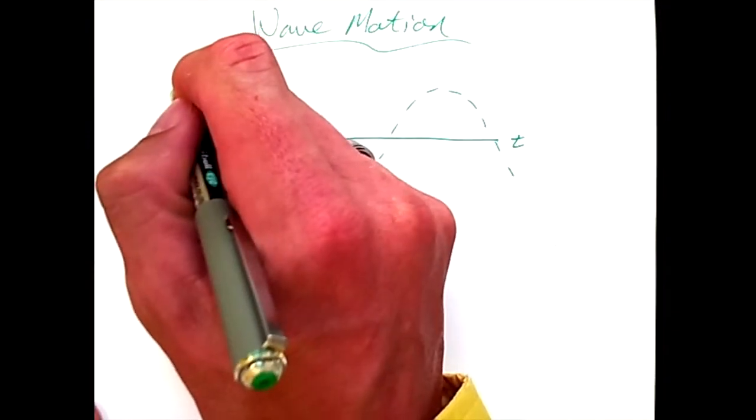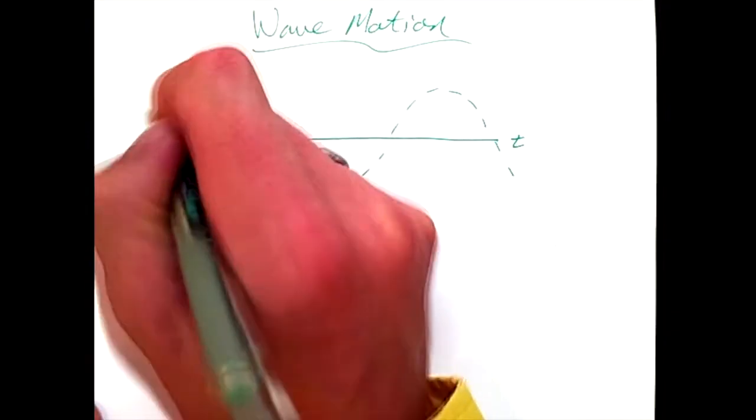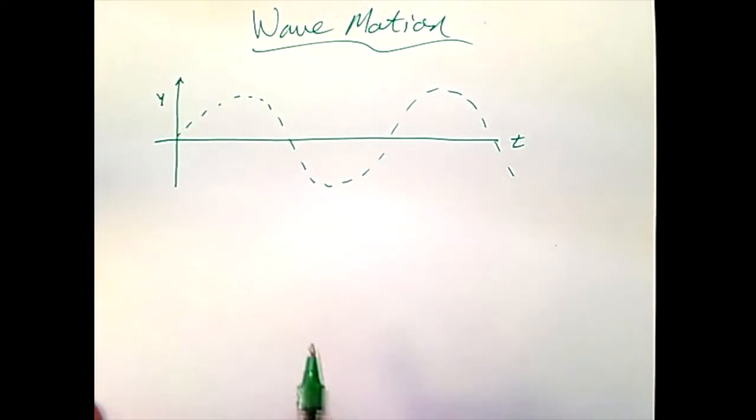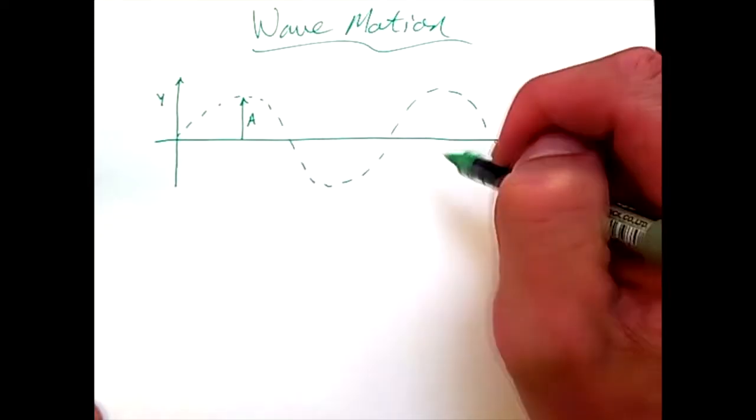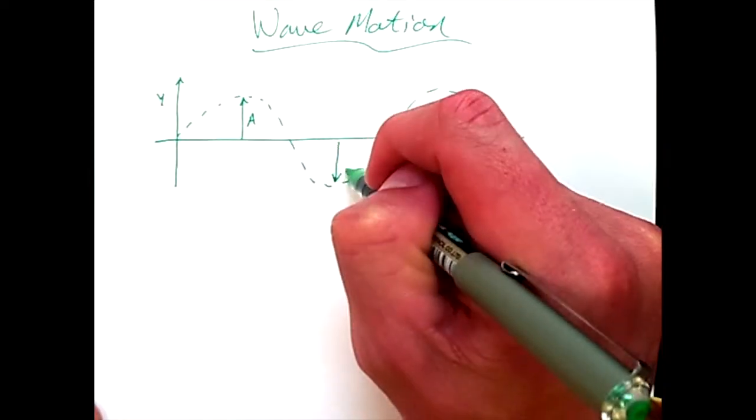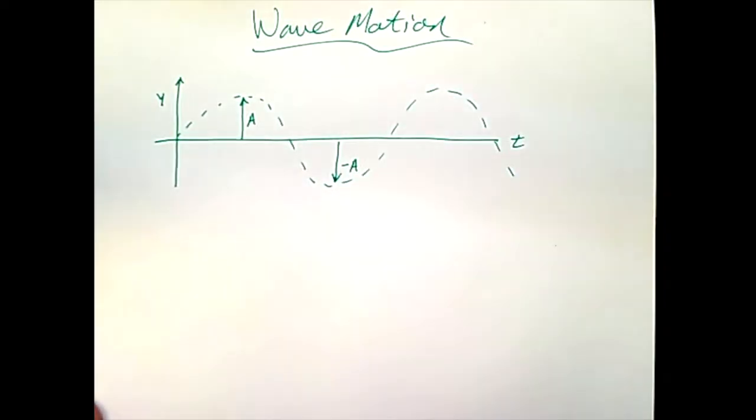And since the vertical axis, the y-axis, is measuring displacement, in this case vertical displacement as y, then we identify these points, amplitude here as positive and here as negative, as the maximum displacement for the wave.